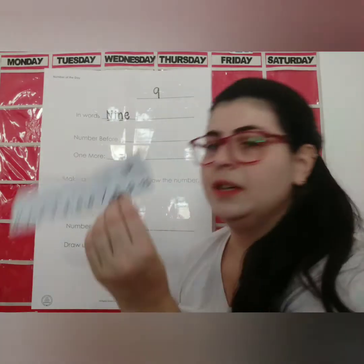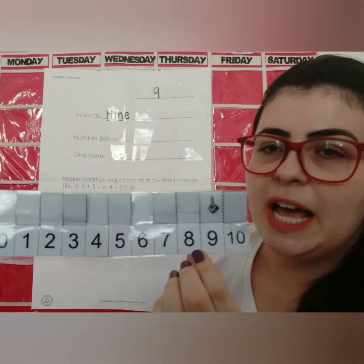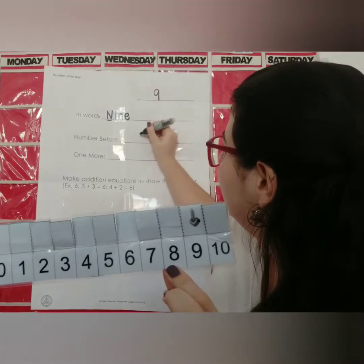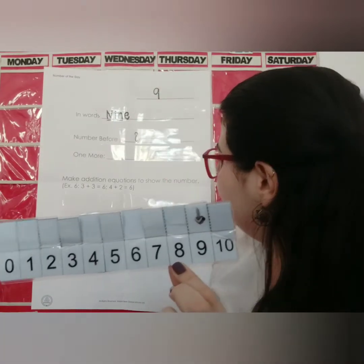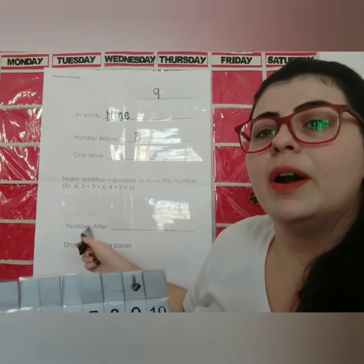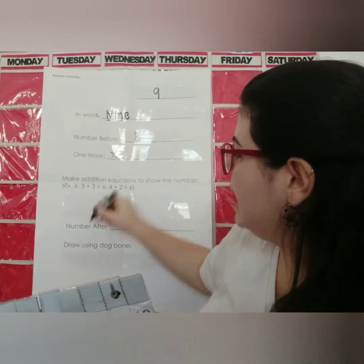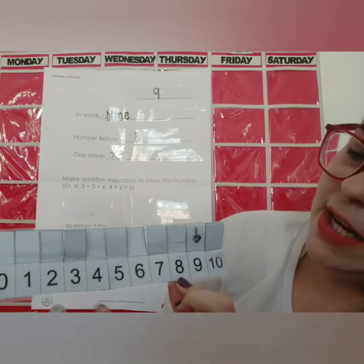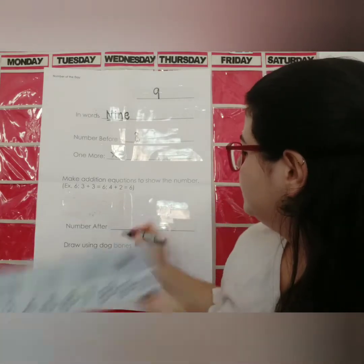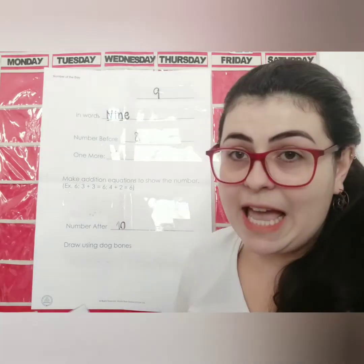Let me do it like this. What's the number before number 9? 8. What's the number after? We're not gonna do this one, okay? Because it's the same. 9 — what's the number after number 9? 10, 10, okay?